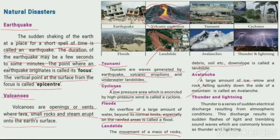Thunder and lightning: Thunder is a serious and sudden electrical discharge resulting from atmospheric conditions. This discharge results in a sudden flash of light and a trembling sound wave, commonly known as thundering and lightning.